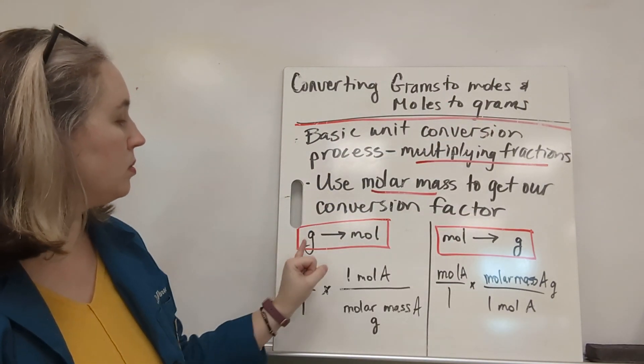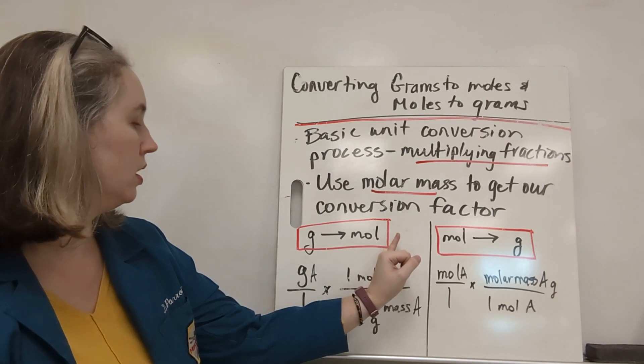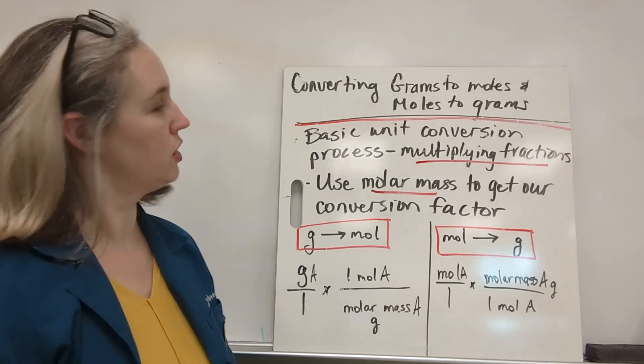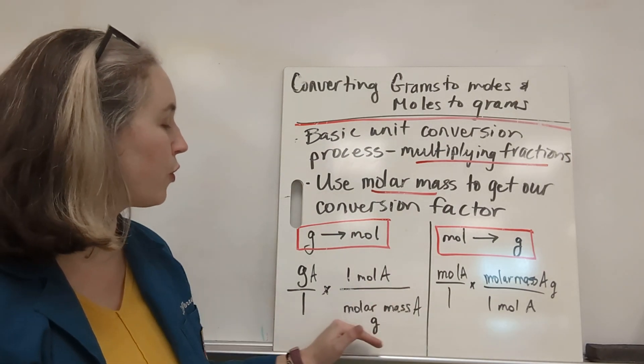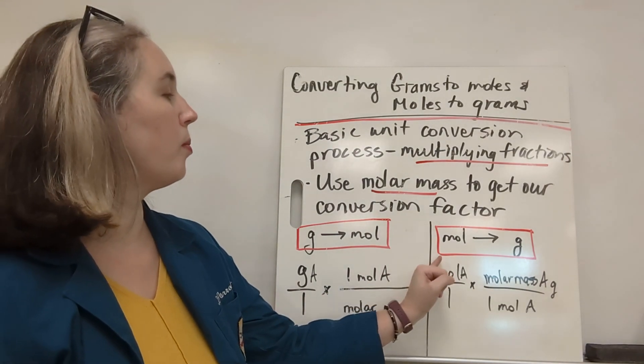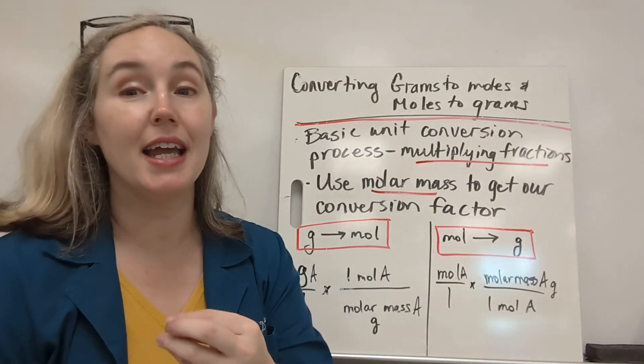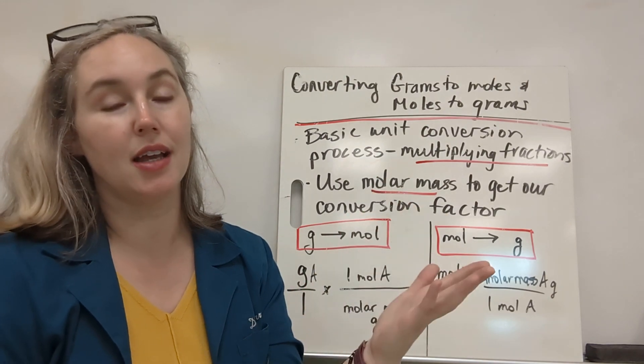If we're going from grams to moles, we're going to put molar mass in the denominator of the converting factor, or the converting fraction. And if we're going from moles to grams, we're going to put molar mass in the numerator. Again, all this is so that our units can cancel.